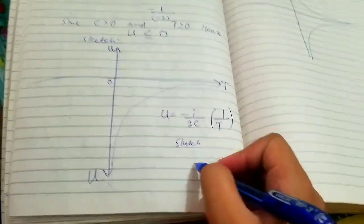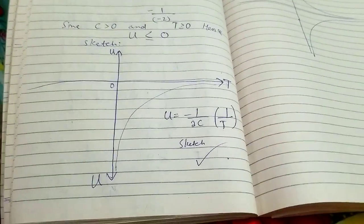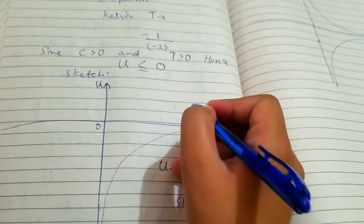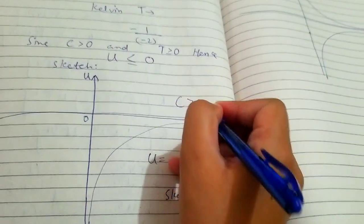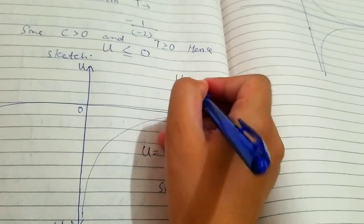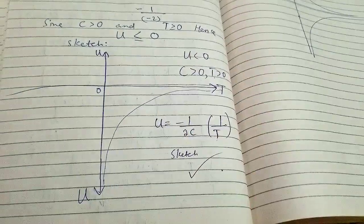This is the sketch. To summarize: C is greater than 0, T is greater than or equal to 0, and hence U is always less than or equal to 0.